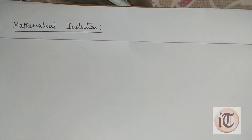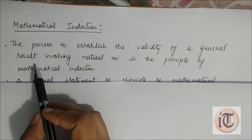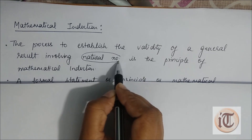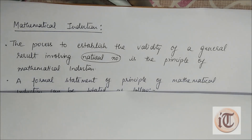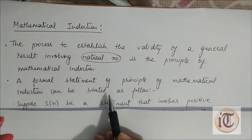So what do you mean by mathematical induction? It is the process to establish the validity of a general result involving natural numbers. Natural numbers are the whole numbers from 1 upwards, or in some branches of mathematics, 0 might also be counted as a natural number. To find out the validity of a general result involving natural numbers is the principle of mathematical induction. A formal statement of the principle of mathematical induction can be stated as follows.